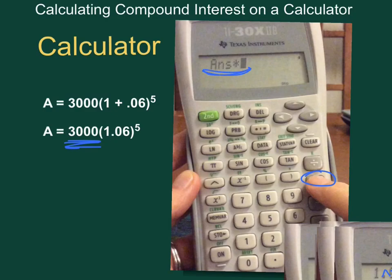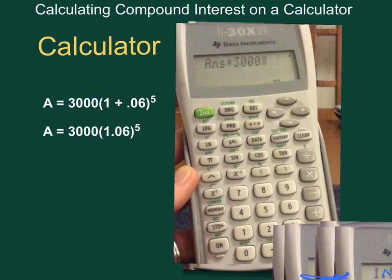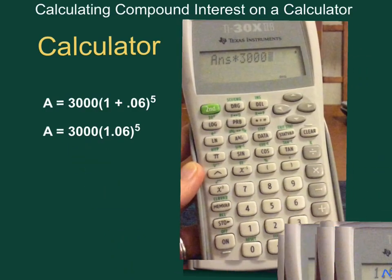And this is kind of neat. Do you see it says answer times? This is just saying take that really long number, whatever the answer was, and multiply it by whatever I type in. So in this case, I'm going to take the answer times my principal, which was 3,000.